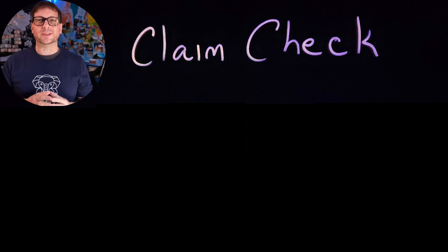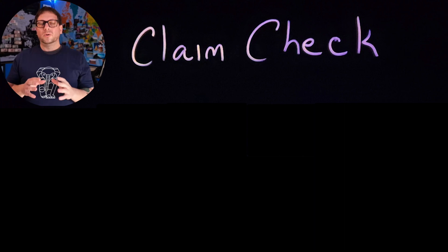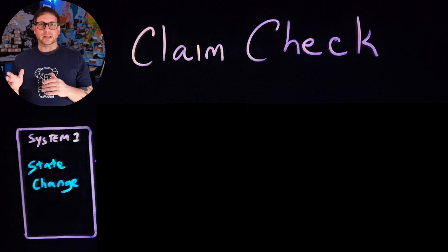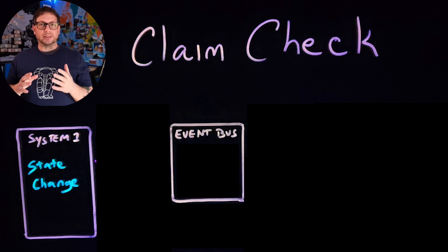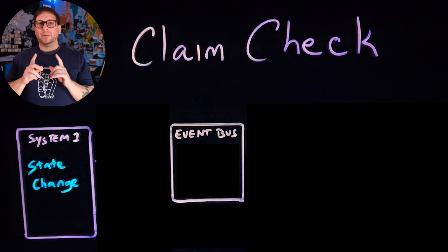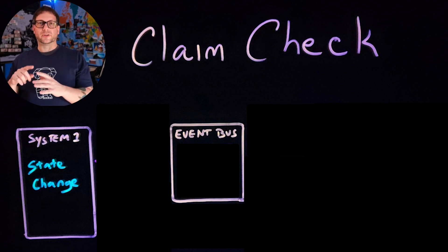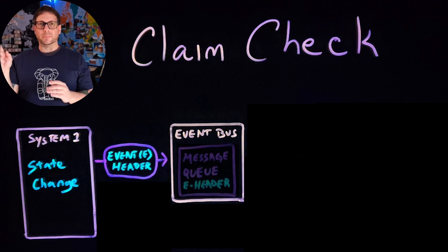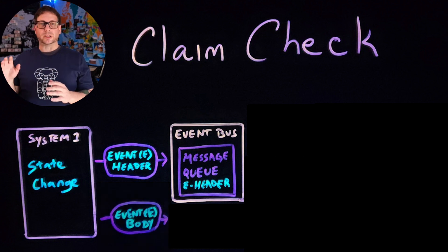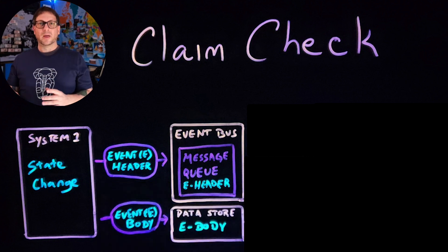Let's draw it out and see what it looks like. We'll start with our source system, which is publishing an event in response to a state change, and we also have our event bus. This looks pretty similar to a lot of our other event-driven architecture patterns, but the key difference is that instead of sending the entire message to the event bus, the publisher splits it into a header, which goes to the event bus, and the message body, which goes to a separate data store.